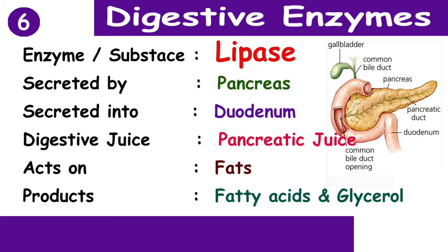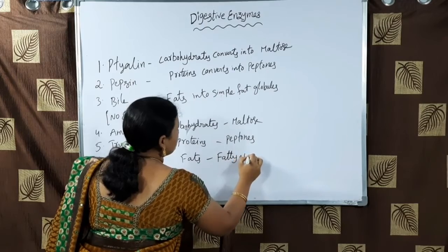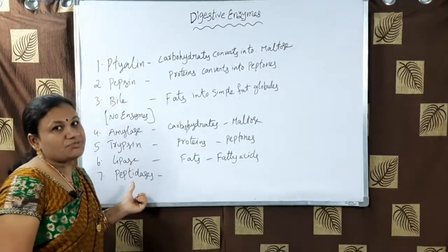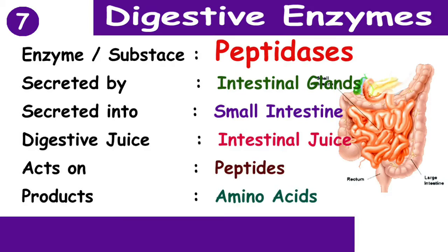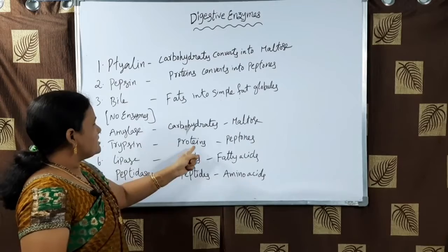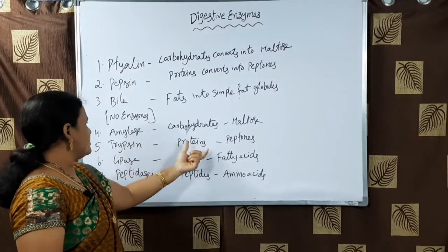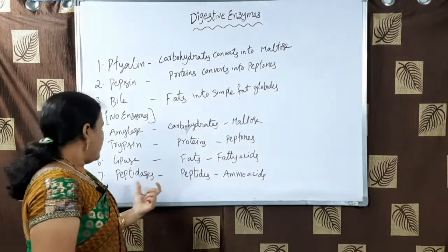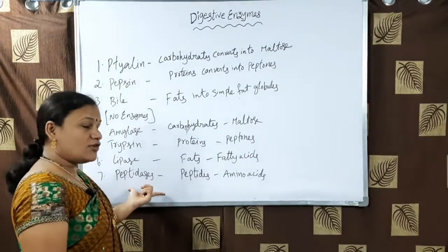The sixth one is lipase, secreted by the pancreas in pancreatic juice. It converts fats into fatty acids. The seventh one is peptidases, secreted by intestinal glands into the small intestine. The digestive juice is intestinal juice. Peptidases act on peptides and convert peptides into amino acids.